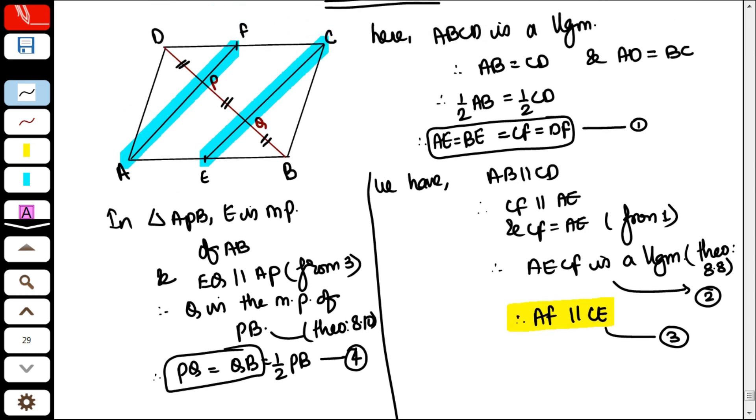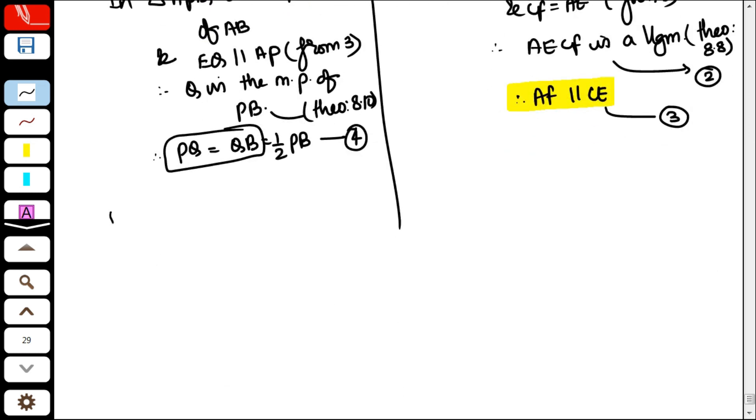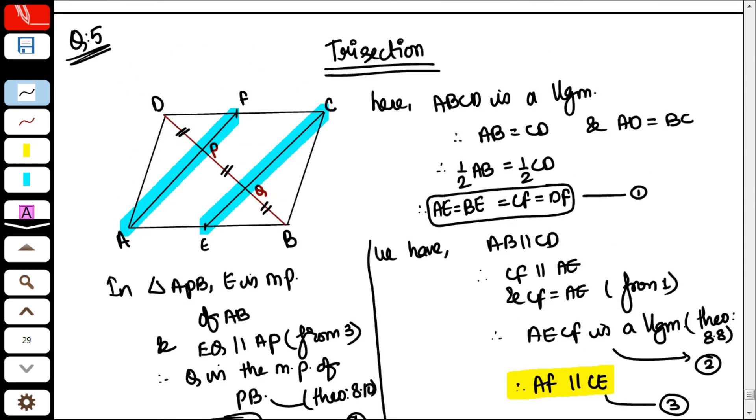Keep this in mind. We proved the lower triangle. Now, which is the upper triangle? DQC. In triangle DQC, F is the midpoint of CD. And,